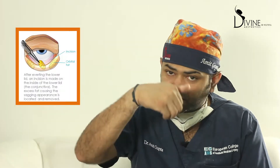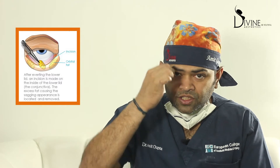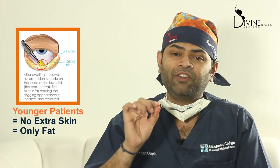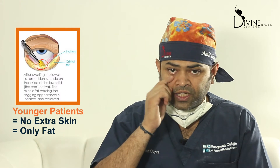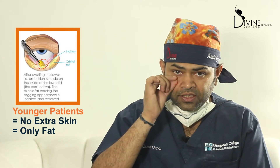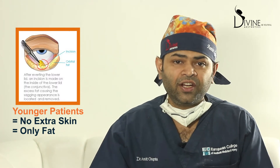One approach involves making an external incision from outside to remove extra skin. The second approach is scarless — done from inside the eye through the conjunctiva layer, where we make a small incision and take out the extra fat. In this scarless approach, remember these patients don't have extra skin — they only have extra fat.